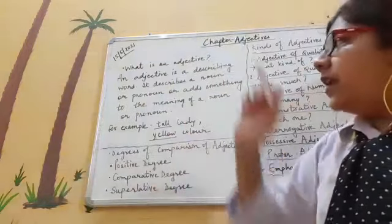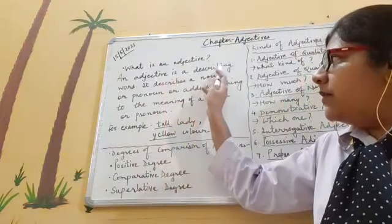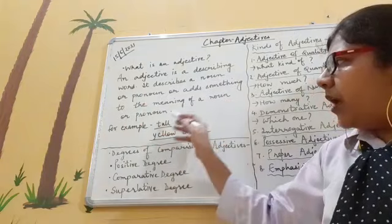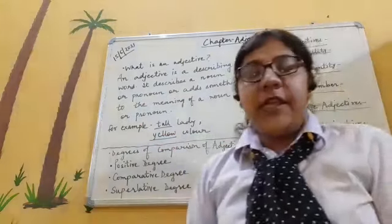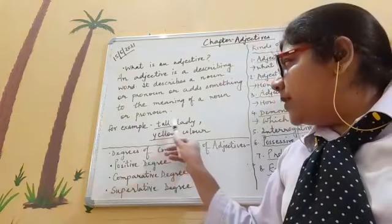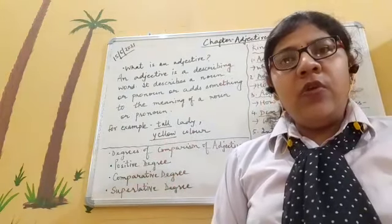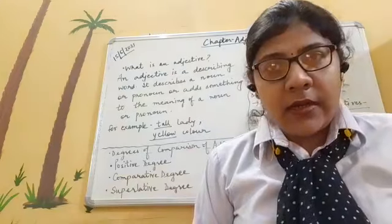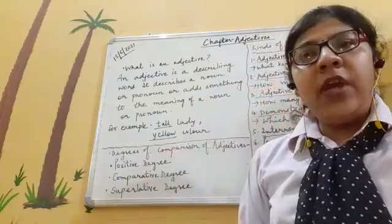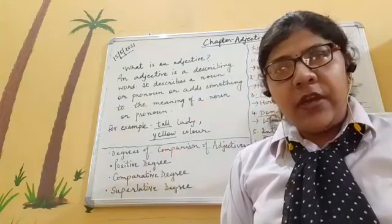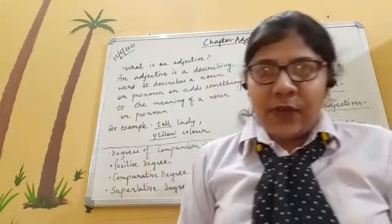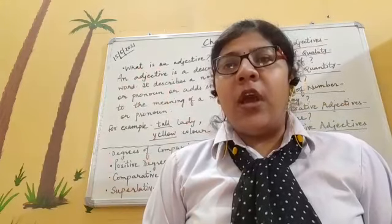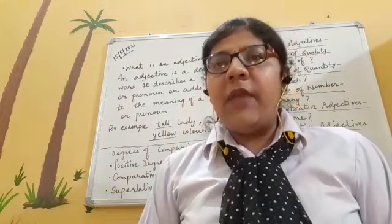Now, what basically is an adjective? An adjective is a describing word — it describes a noun or a pronoun, or adds something to the meaning of a noun or pronoun. For example, in 'tall lady,' the word 'tall' is describing the noun 'lady,' so 'tall' is the adjective. Similarly, in 'yellow color,' 'yellow' describes the noun 'color,' so 'yellow' is the adjective.